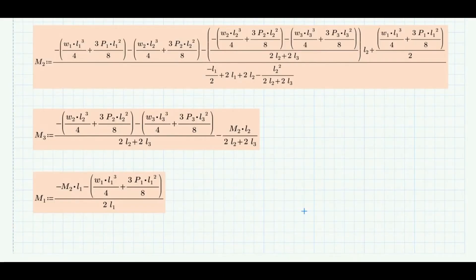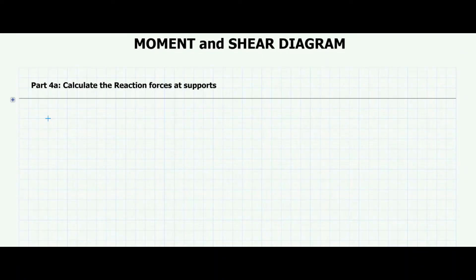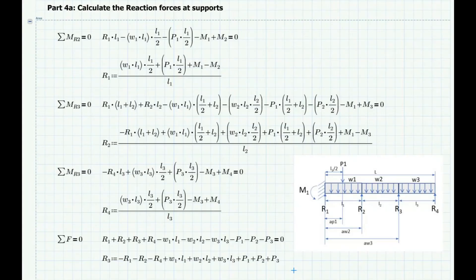To summarize, these are the derived formulas for M2, M3, and M1. MathCAD uses these formulas to calculate, and these are the values of the moments at supports. The next part is to calculate the reaction forces. I will calculate two sets of reaction forces: the first considering the calculated moments at the supports, and the second considering zero moment at supports, or a free end condition. I will need these reaction forces when I define the equations for shear and bending moment diagrams. Using the equilibrium equations, I first cut the beam using the span from R1 to R2 and take moment about R2 to solve for R1.